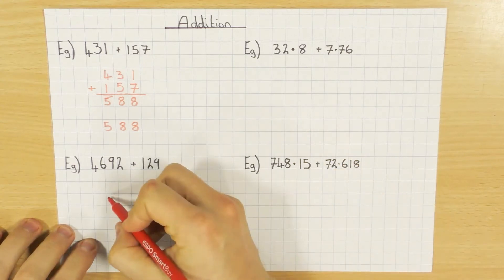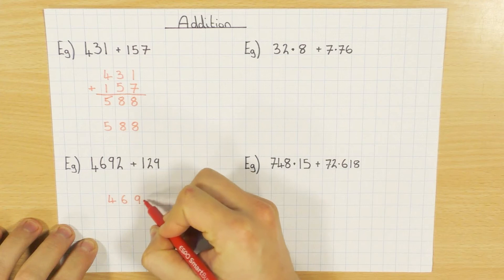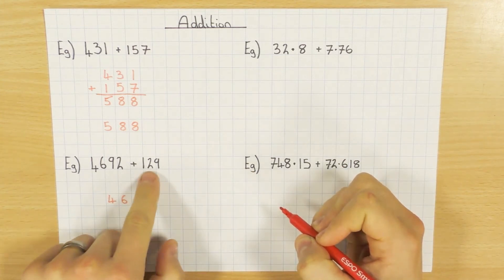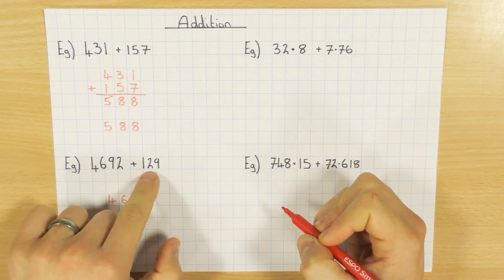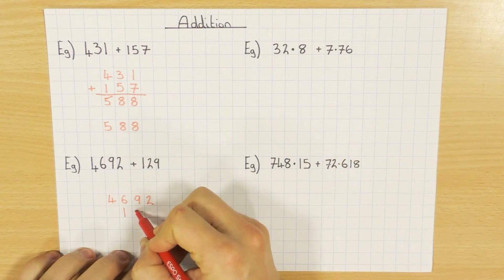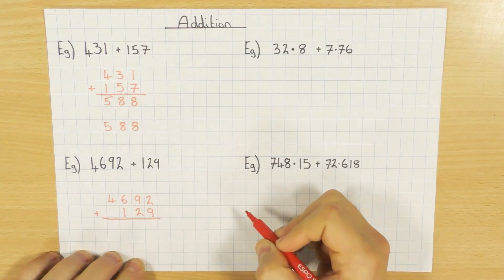Okay, let's have a look at this one then. So let's write out the 4692. And again, a very common error is now mismatching the 129. But remember, hundreds, tens, units. This is my hundreds column. This is my tens. And then the units. So make sure you line it up correctly. Plus, and then my line just to separate them out.